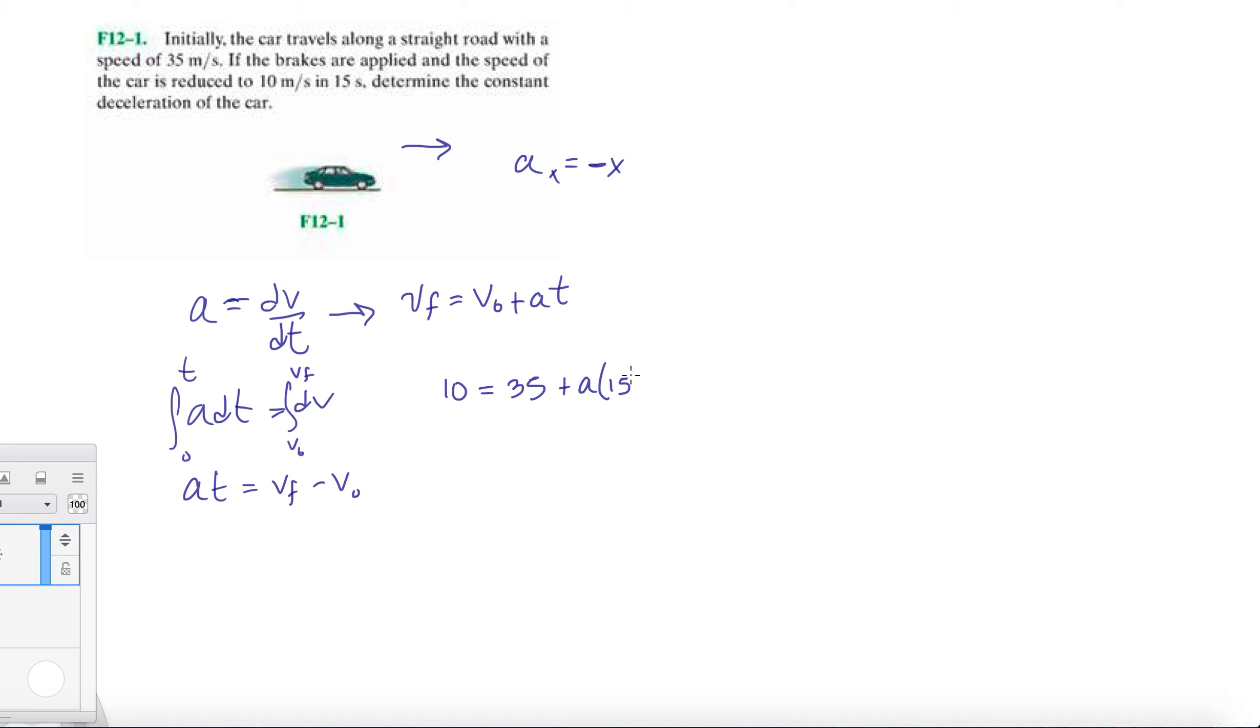second and seconds. So when we isolate a, we end up getting minus 25 over 15, which is roughly minus 1.67 meters per second squared. And that's it. Again, this begins very slowly and it grows exponentially from here.